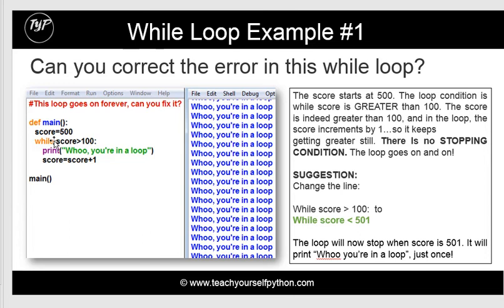Have a look at this example — this loop goes on forever. You have a score variable set to 500, and then it says while score is greater than 100, print you're in a loop. The score is 500 and it's going up by 1 every time, so it's going to keep going up and up and never stop. You need to change the stopping condition, and only then will this loop actually stop and function correctly.